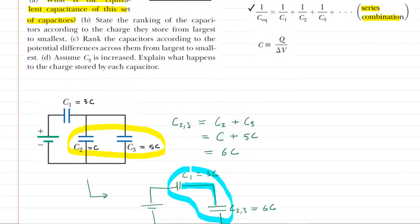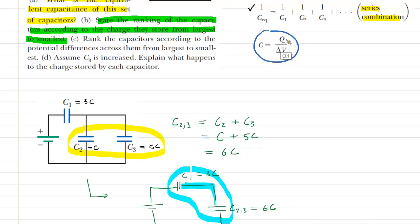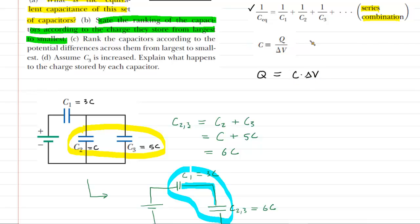Part B says to state the ranking of the capacitors according to the charge they store from largest to smallest. To talk about charge, we're going to consider the equation Q equals C times delta V. If we multiply both sides of the capacitance equation by delta V, we can see that the charge equals C times delta V. We'll keep that equation in mind.